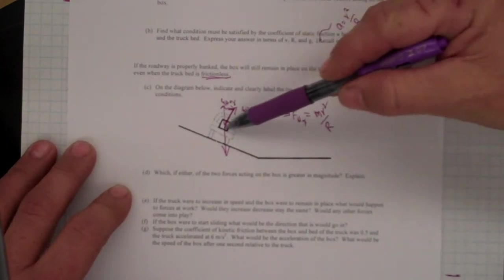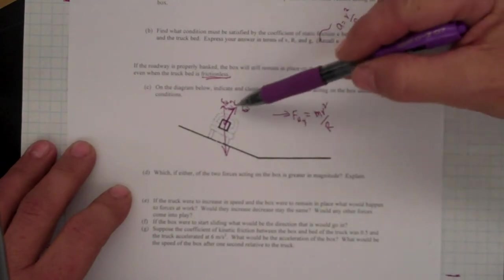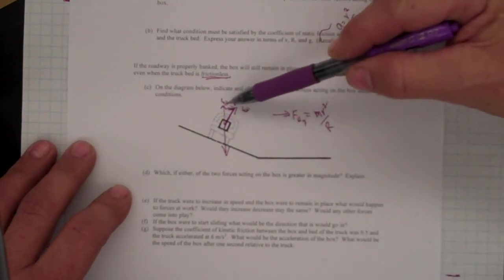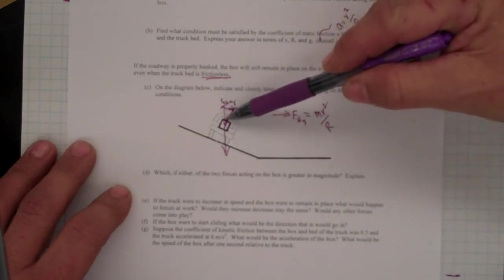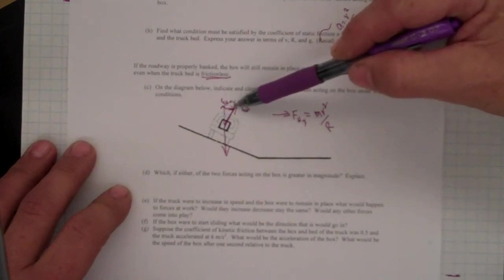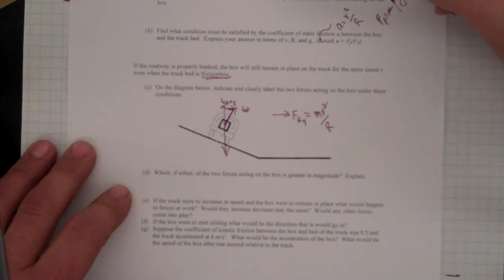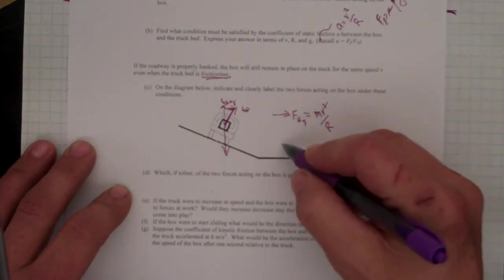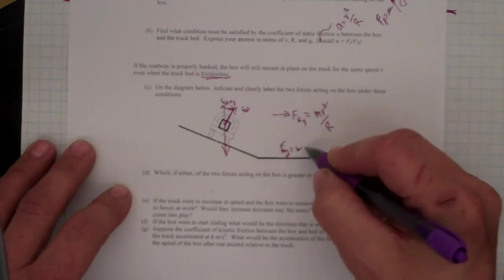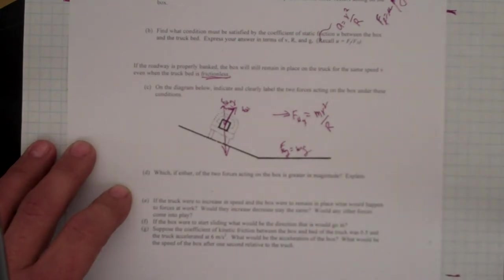Now, notice that Mg is strictly down, but the F normal force has a component that is both vertical and a component that is horizontal. The vertical components have to be equal, have to be balanced, there's no acceleration in the y direction, so that clearly F normal in the y direction is equal in magnitude to Mg.